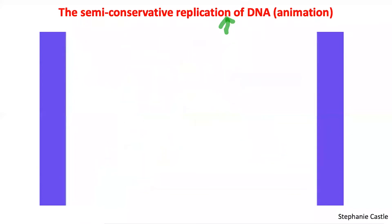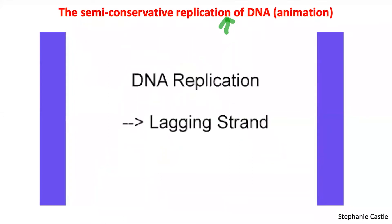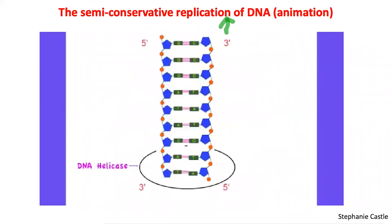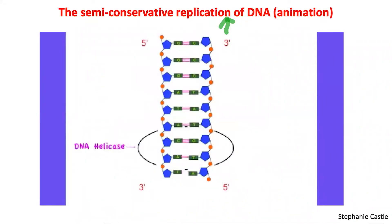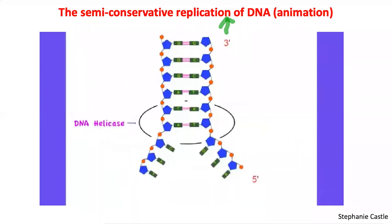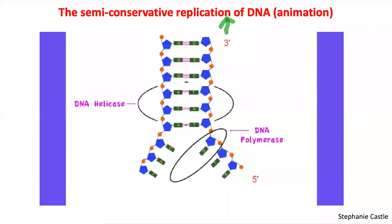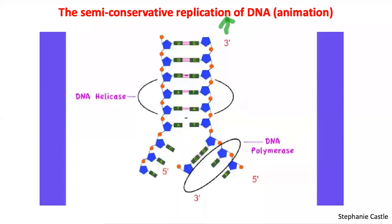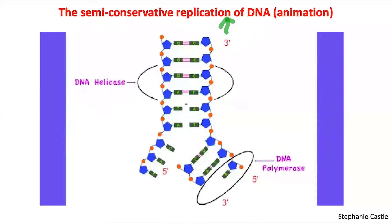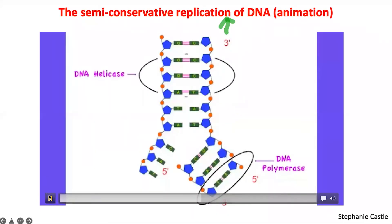Now let's look at the other side of the original DNA strand — we call this the lagging strand. In the same way as before, DNA helicase unwinds and separates the two strands by breaking the hydrogen bonds. DNA polymerase also adds complementary DNA nucleotides. However, because of the anti-parallel nature of the original DNA strand, DNA polymerase has to work in the opposite direction on the lagging strand.